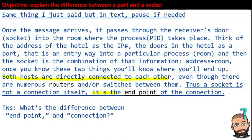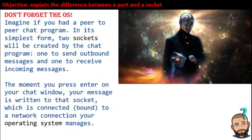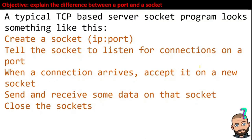A socket is an endpoint, not the connection itself. The ports are an internal addressing to a machine. A client socket will try to connect with a server socket. A server socket accepts a client socket request. For TCP, it looks like this: the first time the server comes online, there is a socket that it creates. The server tells the socket to listen for connections on that port. When a connection arrives to the server, it will accept it on its new listening socket.